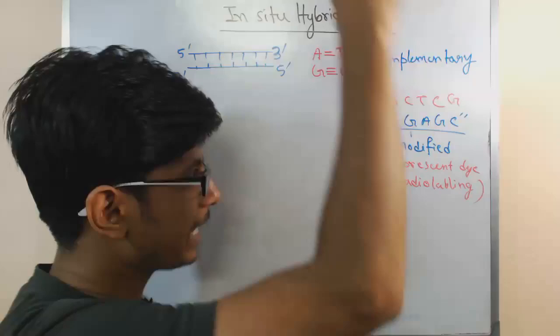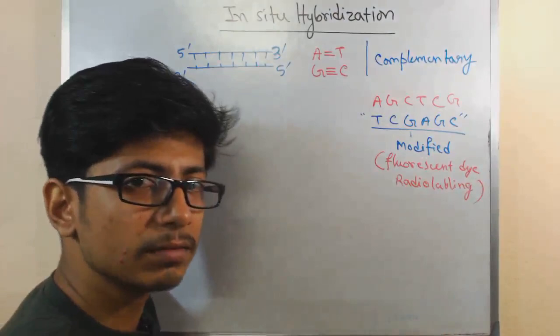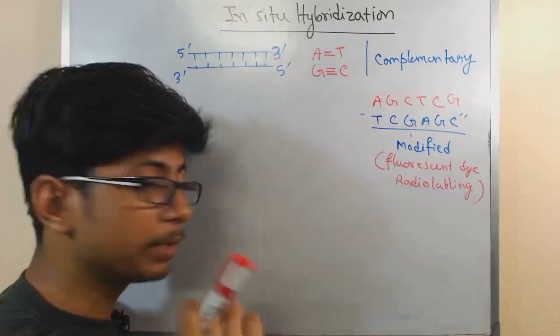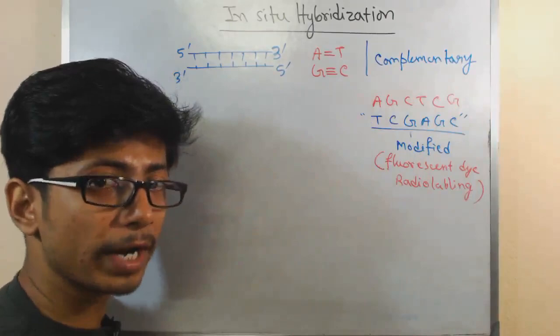Once we do this modification to this synthetic probe that we have, what we do is we take this probe as a bait and we place this bait into the mixture of the cell. We have that cell fixed, fix all the chromosome contents there. Then we take this modified probe. Remember in the genome of the organism, this is the section of gene that we want to find.